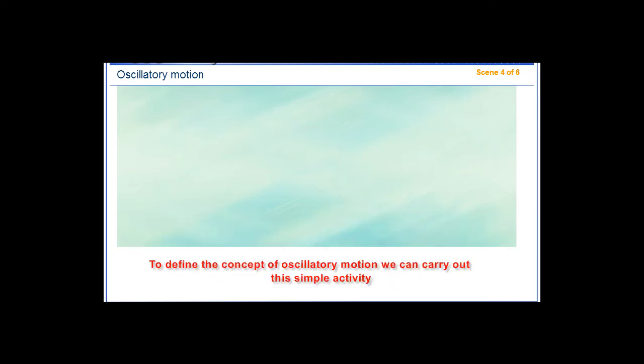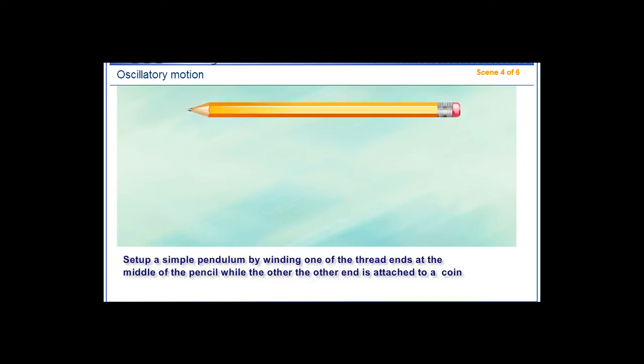To define the concept of oscillatory motion, we can carry out this simple activity. Set up a simple pendulum by winding one of the thread ends at the middle of the pencil while the other is attached to a coin.